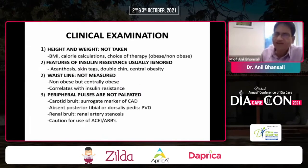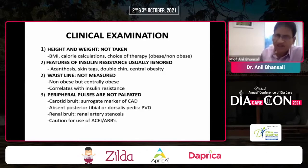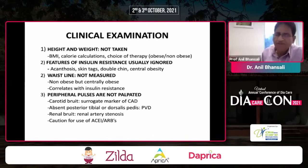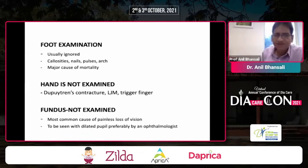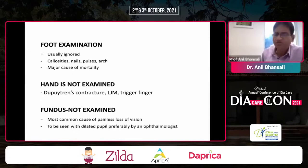On clinical examination, many findings are missed. Height and weight are not taken, which helps in BMI calculation and choice of therapy. Features of insulin resistance — acanthosis, skin tags, double chin, central obesity — are ignored. Waistline should be measured; an increasing waistline is a marker for emergence of diabetes even if BMI is in range. Peripheral pulses are not palpated; a carotid bruit is a surrogate marker of CAD, and absent posterior tibial or dorsalis pedis pulses indicate PVD. Renal bruit suggests renal artery stenosis — be cautious with ARBs and SGLT2 inhibitors. Foot examination — callosities, nails, pulses, and arch — is usually ignored. The hand should also be examined for Dupuytren's contracture, limited joint mobility, and trigger finger.